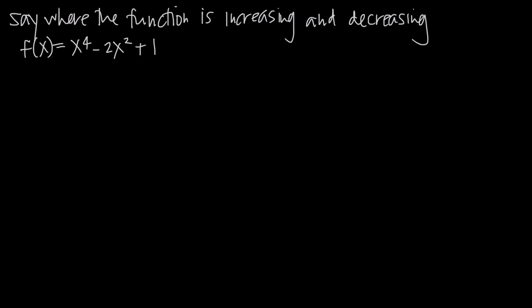In this video, we're talking about how to say where a function is increasing and decreasing. This is part of optimization. In this particular problem, we're working with the function f(x) = x⁴ - 2x² + 1. What we need to do is say where this function is increasing and where it's decreasing.